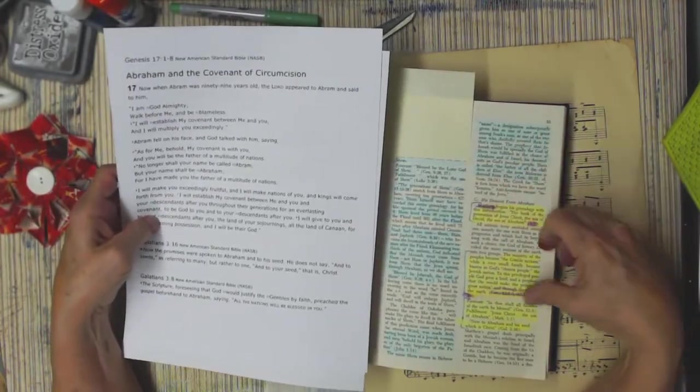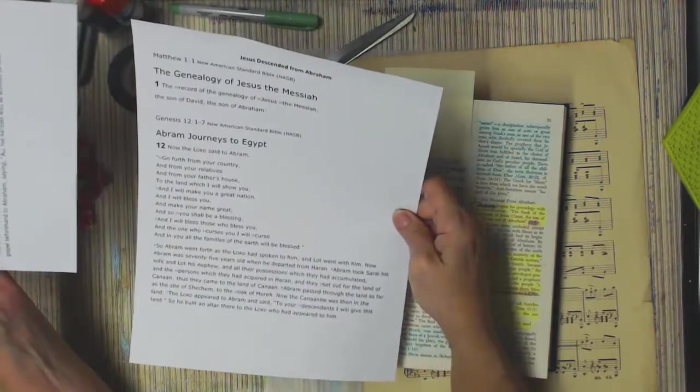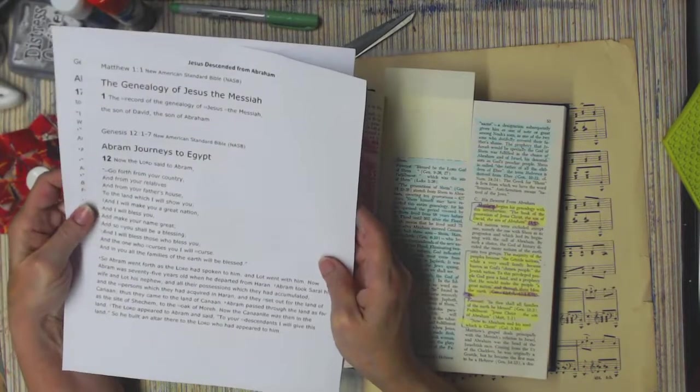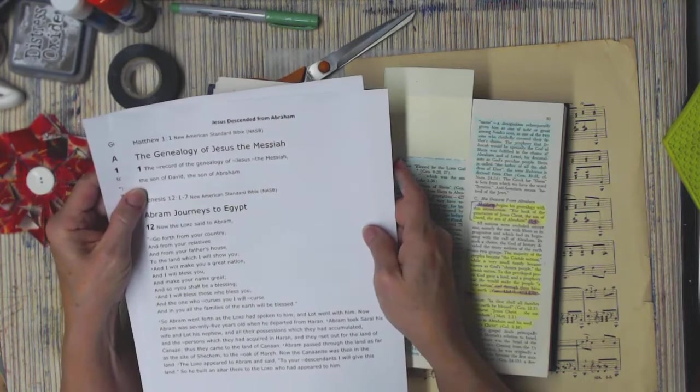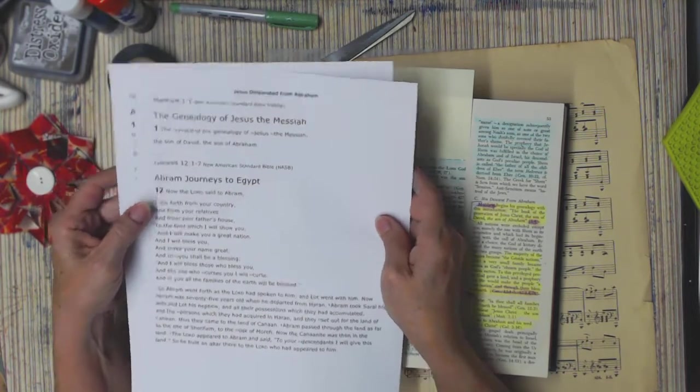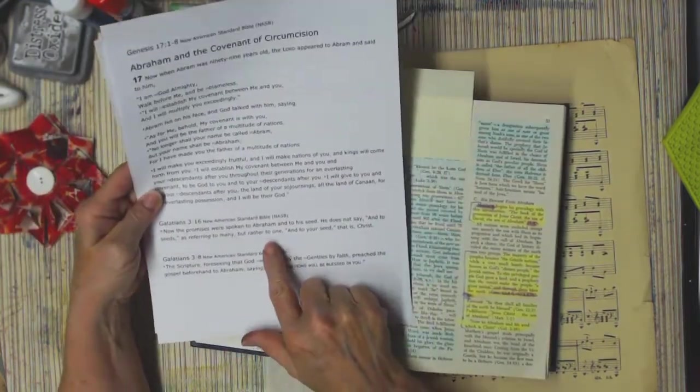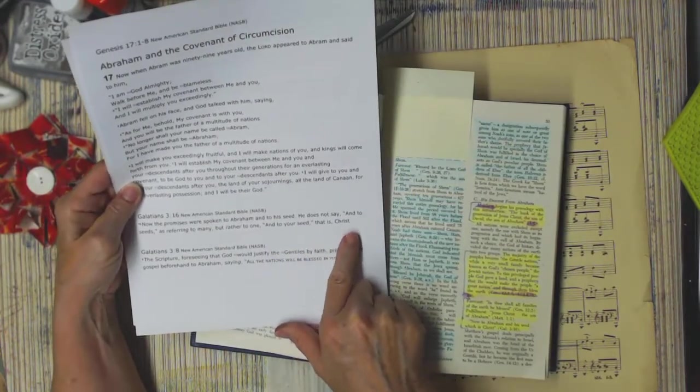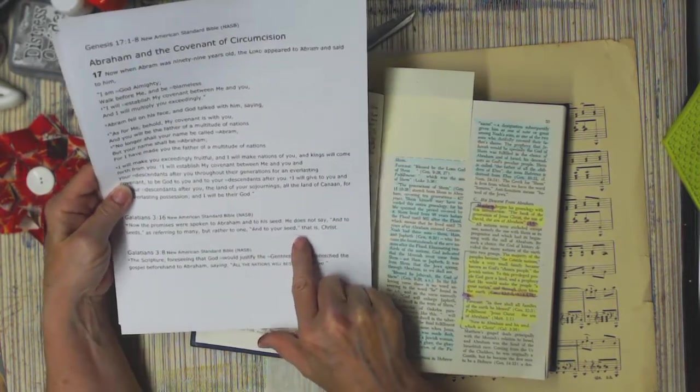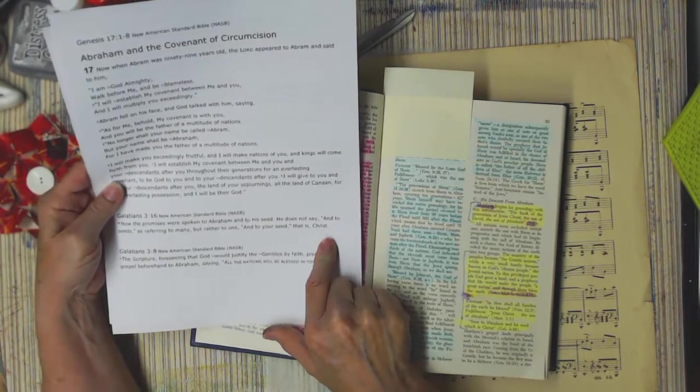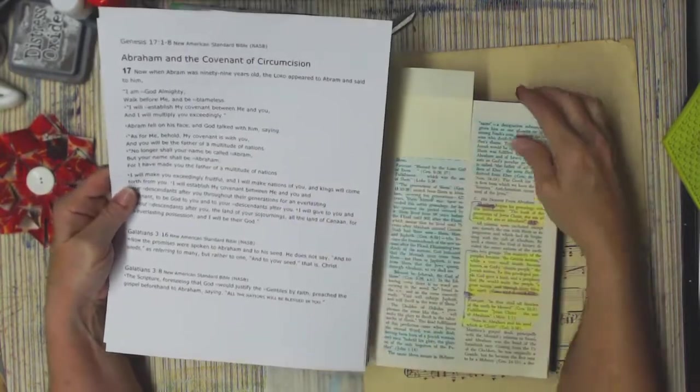The fulfillment of that prophecy is what we read in Matthew 1:1. The record of the genealogy of Jesus the Messiah, the son of David, the son of Abraham. Also, in Galatians 3:16 says, Now the promises were spoken to Abraham and to his seed. He does not say, and to seeds, as referring to many, but rather to one. And to your seed, that is Christ. So that tells us, pretty blatantly in the New Testament, that what the Old Testament was talking about here.